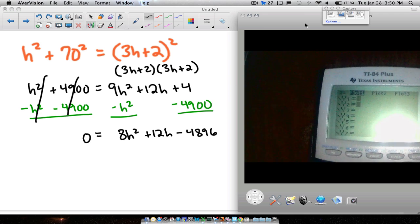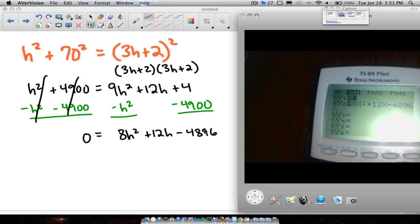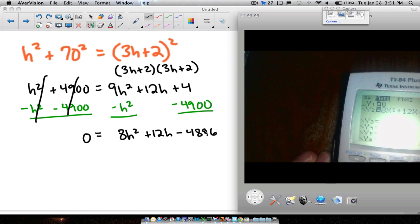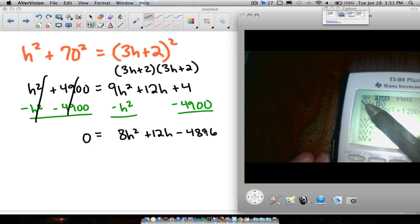So going to y equals, let's clear out what we have. And now let's type in one side of the equation was zero. So I'm gonna put a zero. And let's type in the other side of our equation: 8x² + 12x - 4896. Remember we have to use x instead of h. Now what I'm going to do here is I'm going to come up here. I'm moving my cursor over here to this flashing thing. I'm going to press enter one time. And what that's going to do is it's going to bold that line.